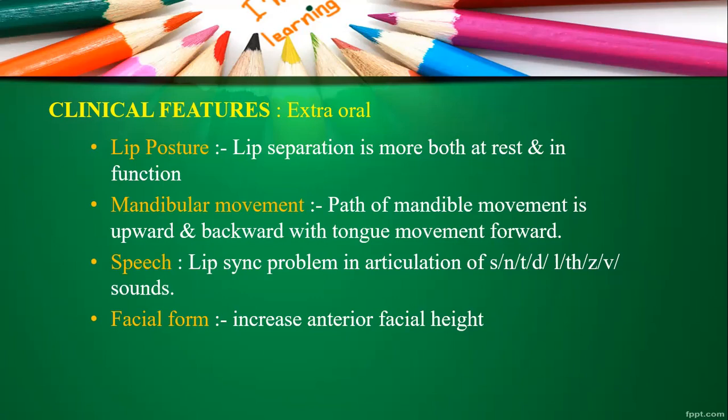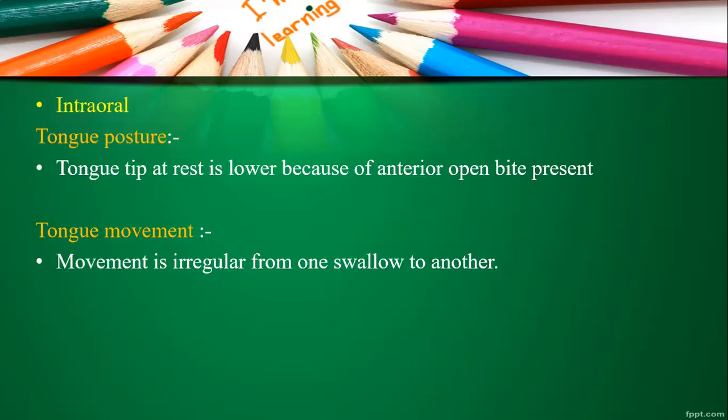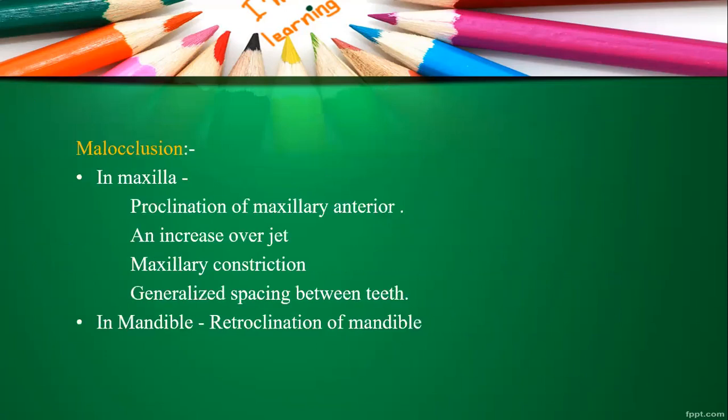Regarding facial form, there will be increased anterior facial height. Looking at tongue posture, the tongue tip at rest is lower because of the anterior open bite, and movement of the tongue while swallowing is irregular from one swallow to another. In terms of malocclusion in the maxilla: obvious proclination of maxillary anteriors, increased overjet, maxillary constriction, and generalized spacing between teeth will be present.